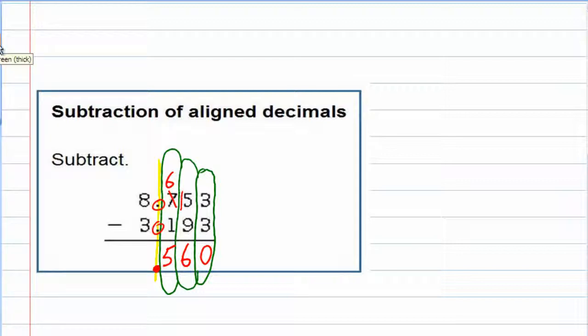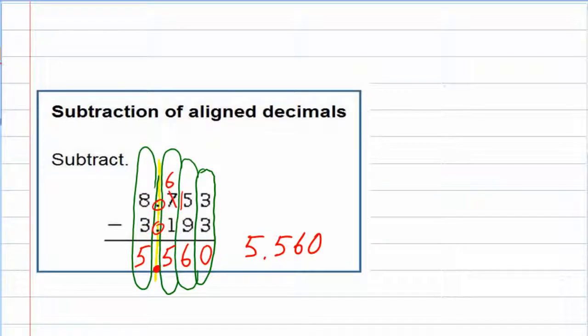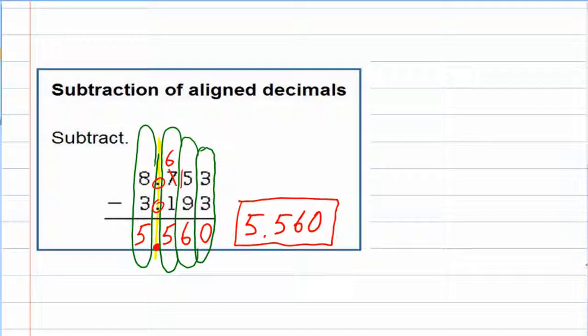So that if I keep going place value by place value, when I move on to the next one and I get the 8 minus 3, that also gives us 5, but it is now to the left of the decimal. So this way, we have our solution 5.560. Technically, we don't have to write the 0 out there, but there's nothing wrong with leaving it there. So that is the two decimals having been subtracted.